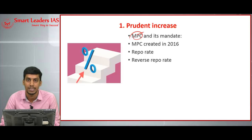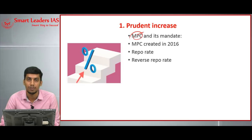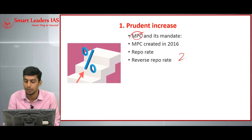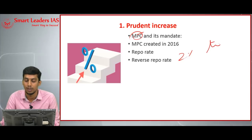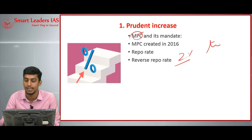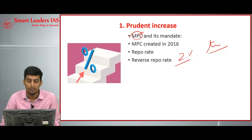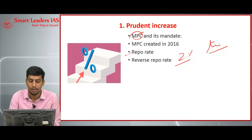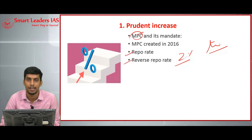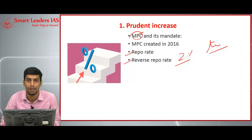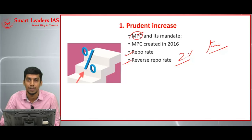All decisions will be taken by majority vote. The RBI Governor, who is ex-officio chairman of the Monetary Policy Committee, will have a casting vote. It is the responsibility of the MPC to keep inflation between 2% and 6% — the lower tolerance is 2% and the upper tolerance is 6%. Repo rate is the rate at which RBI lends money to commercial banks, and reverse repo rate is the rate at which RBI borrows money from commercial banks.